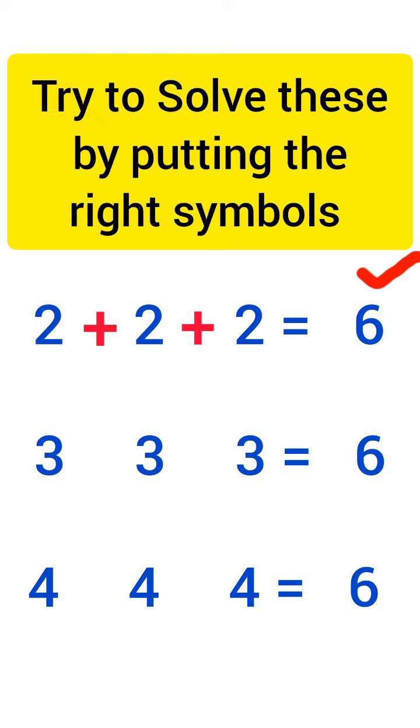Let's try to solve next. First of all we will put the multiply sign after first 3. Then we will put minus sign after second 3. That means 3 times 3 equals 9 minus 3 equals 6.